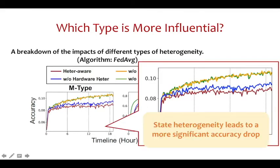The results are shown as follows. We find that compared to the accuracy drop caused by hardware heterogeneity, state heterogeneity leads to a more significant accuracy drop. So, state heterogeneity is more responsible for the performance drop.